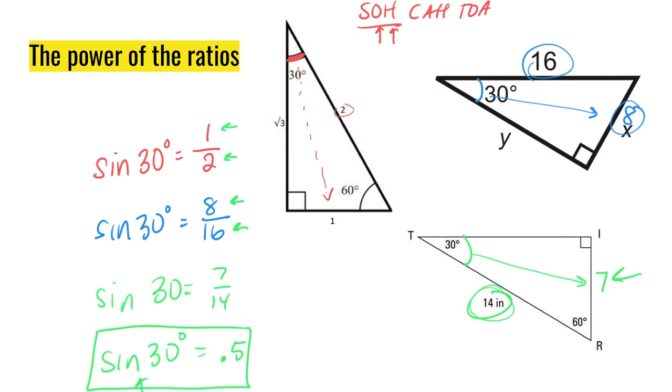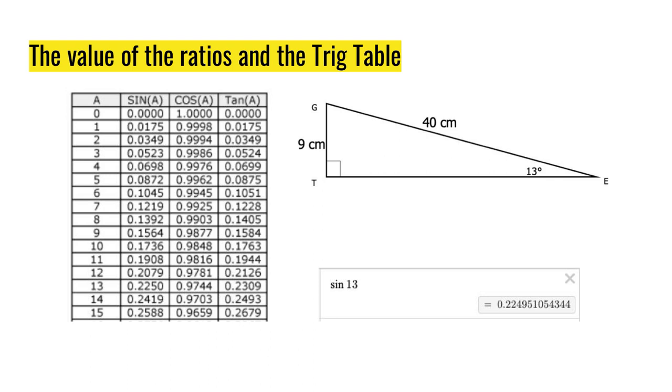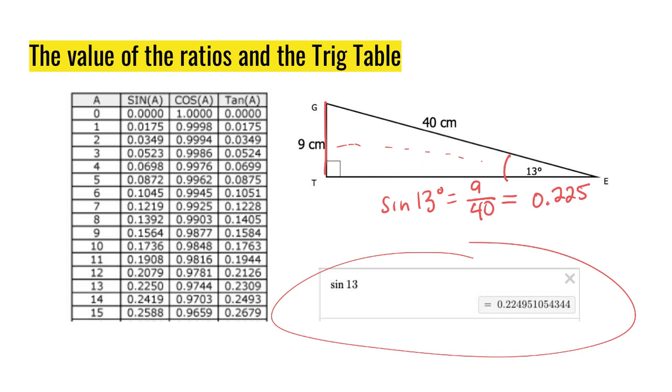This is so powerful that we've organized all of these ratios in a table. This is just a snippet of the table right here with just the angles 0 through 15 so that you can actually see the numbers well in this video. When I look at this triangle right here and I write down what is the sine of 13 degrees, I go opposite over hypotenuse. Well, 9 over 40 is 0.225. Here's what happens if I plug sine of 13 into a calculator in degree mode.